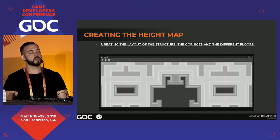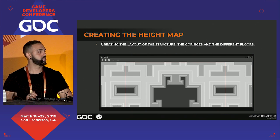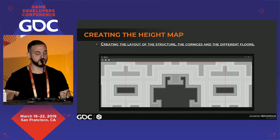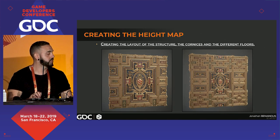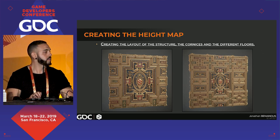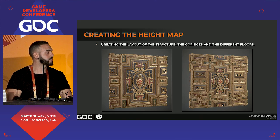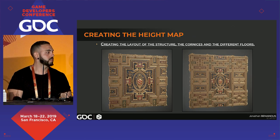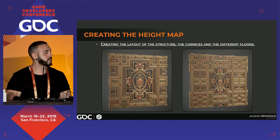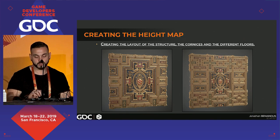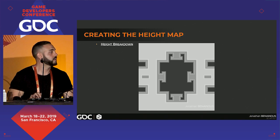I had to do some back and forth to tweak my bevel and ensure everything was clean. To illustrate tiling: here's the final material applied on a rounded cube. You can see that when tiled twice, the composition is interesting and works well.